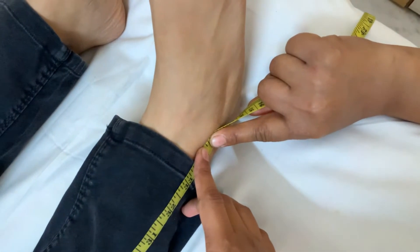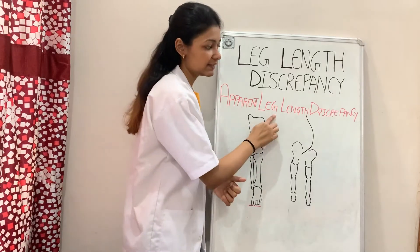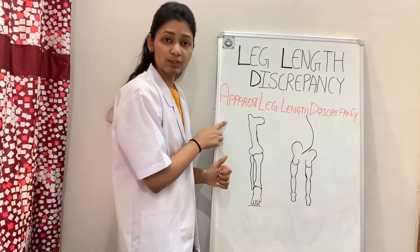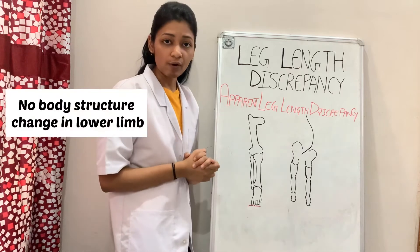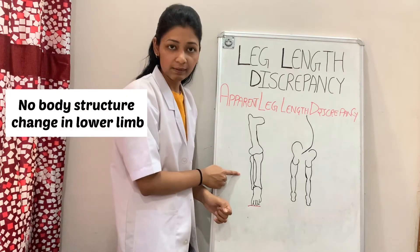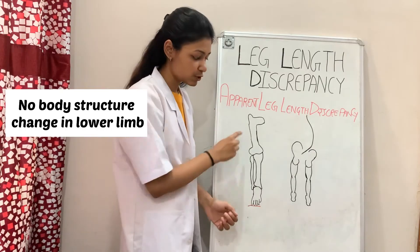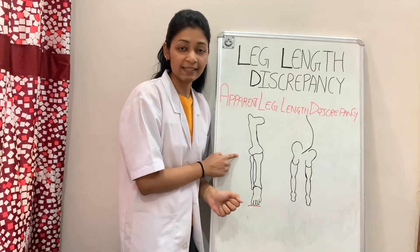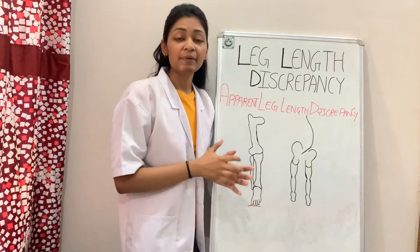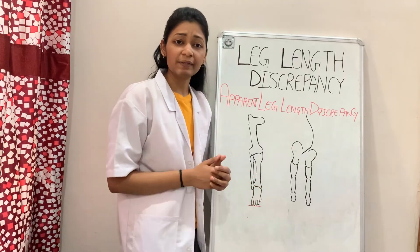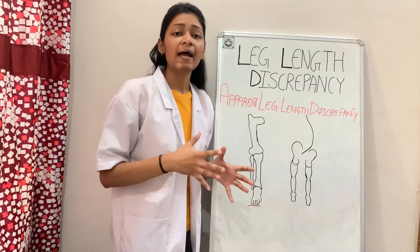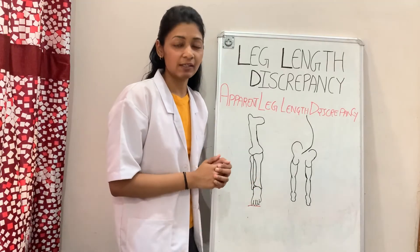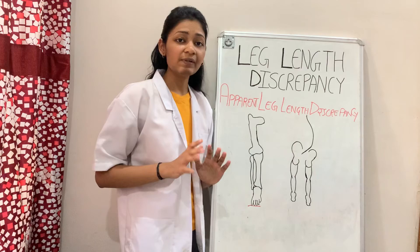If you find both values normal but the patient still has leg length discrepancy, then it is due to apparent leg length discrepancy, also known as functional leg length discrepancy. In this type, there is no fault in any bony structure of the lower limb — all the anatomical structures of the lower limb will be normal — but the patient still has leg length discrepancy. This is due to compensation: the patient adapts to any kind of pathology present in the pelvis, spine, or lower limb.